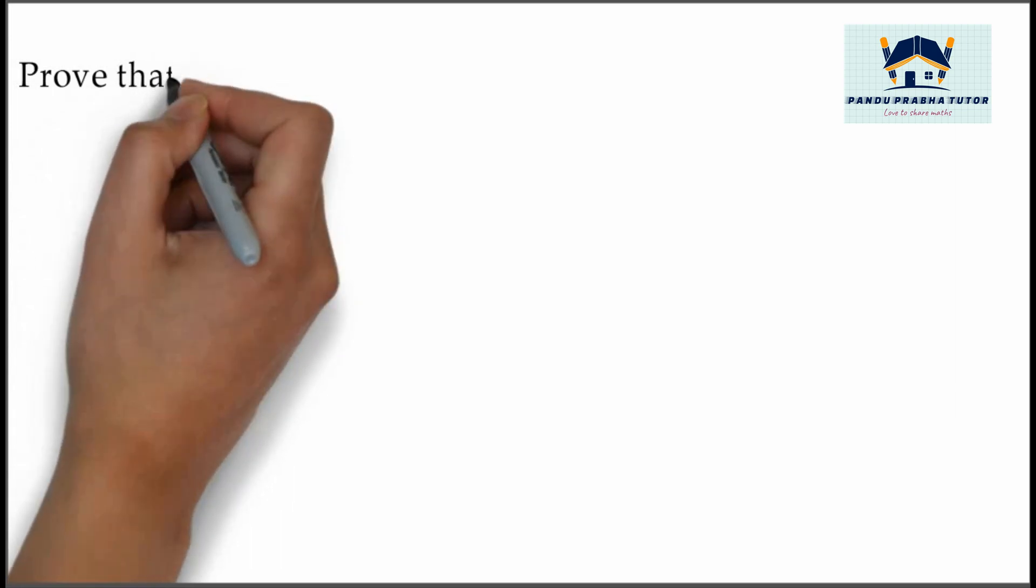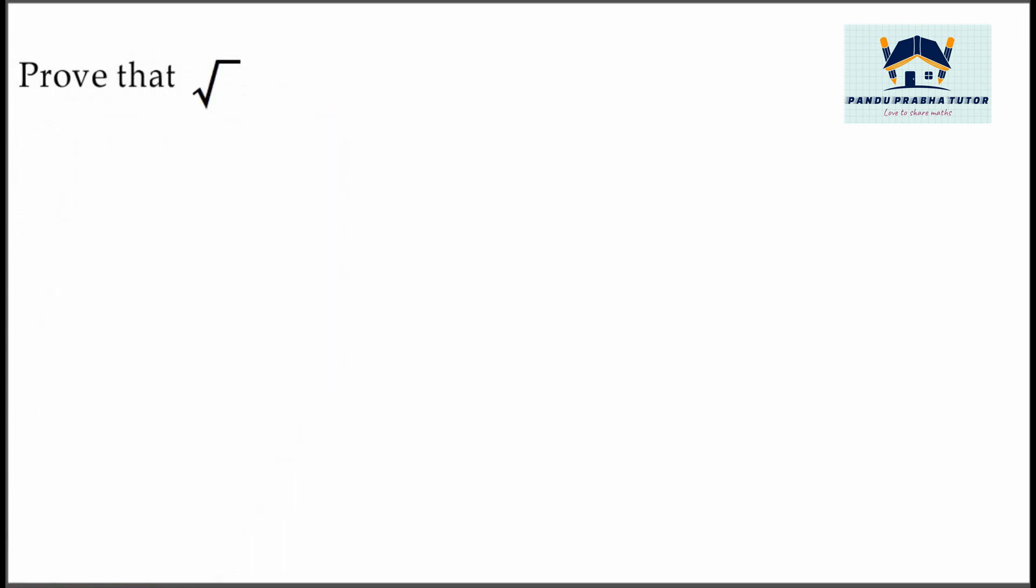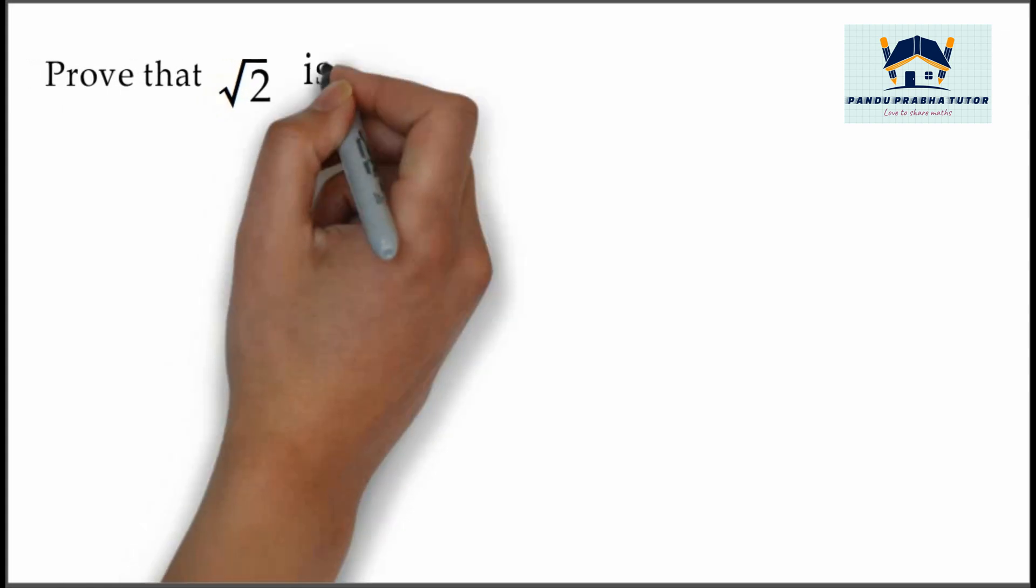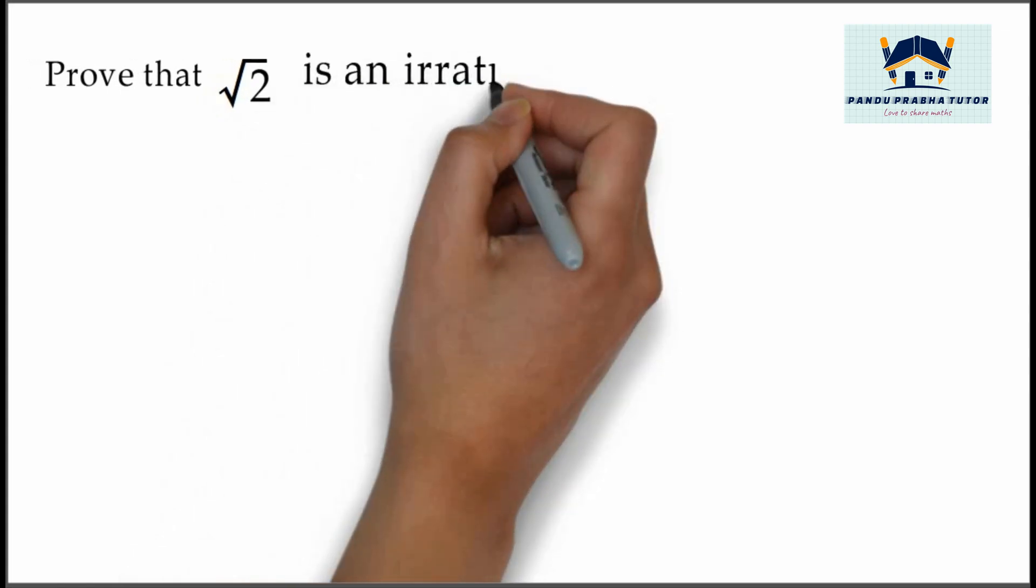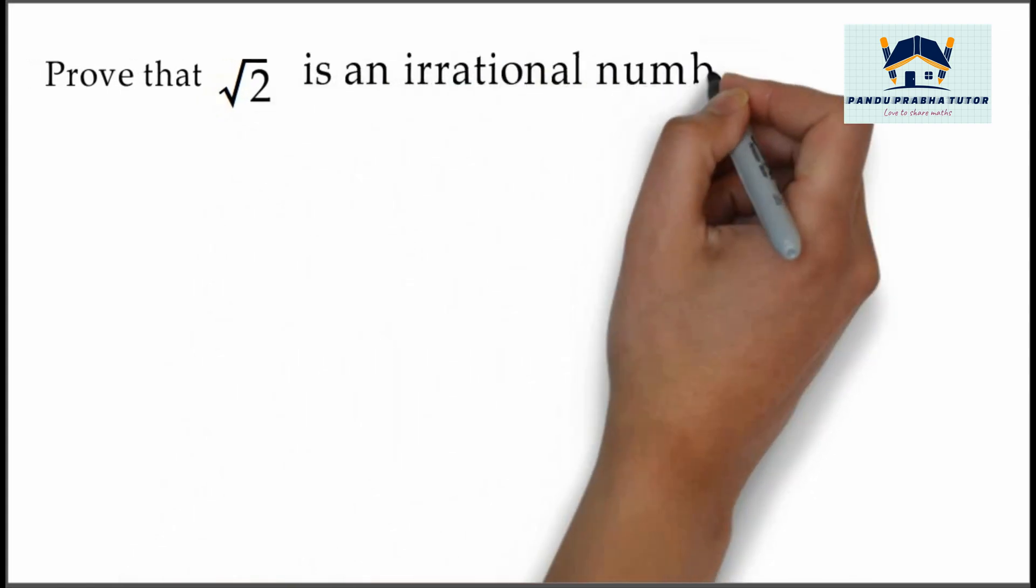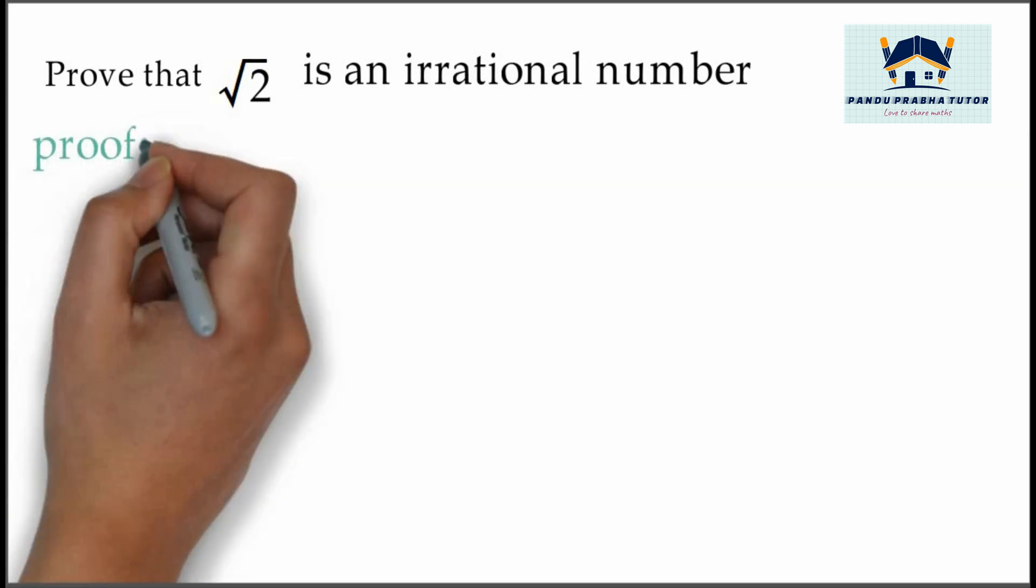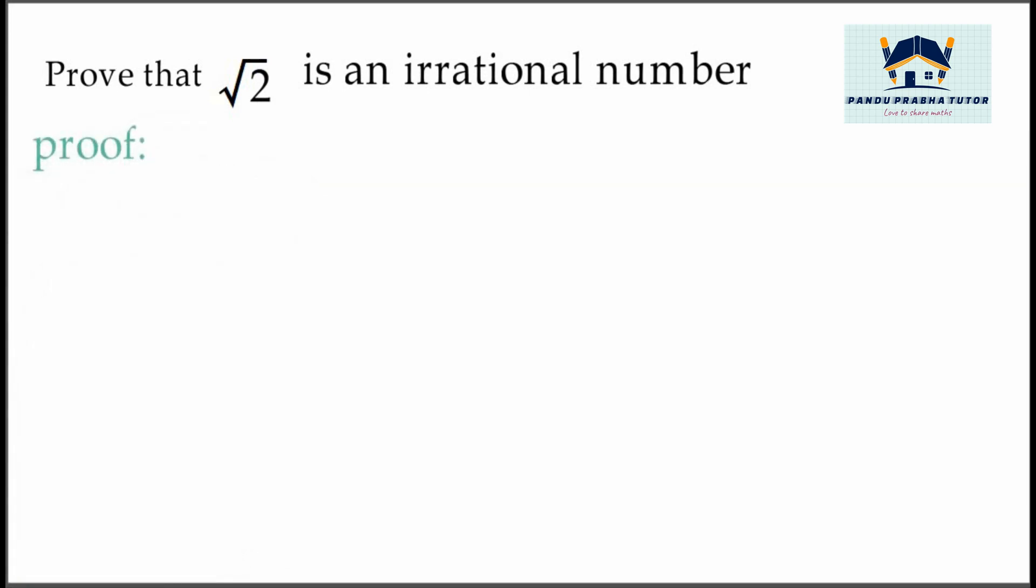In this video, we are going to prove that √2 is an irrational number. We know that rational numbers can be expressed in the form of a divided by b, or p/q.